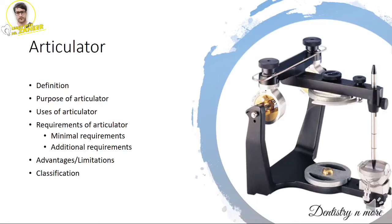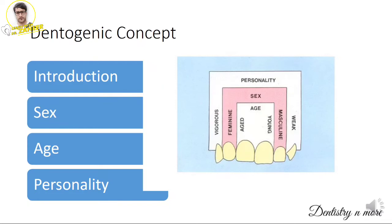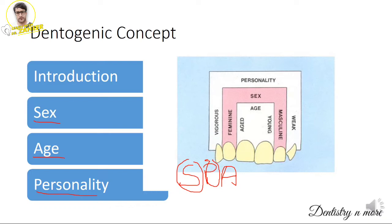Next is the dentogenic concept, also called the SPA concept — Sex, Personality, and Age. Tooth selection is done in this same order: first based on sex, next on personality, and last on the age of the patient. This diagram is helpful to understand the SPA concept.